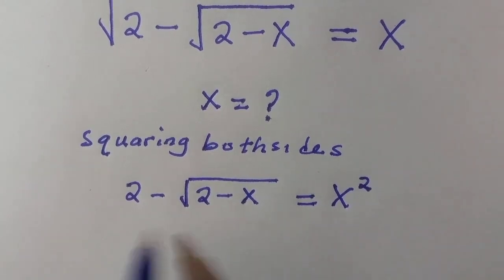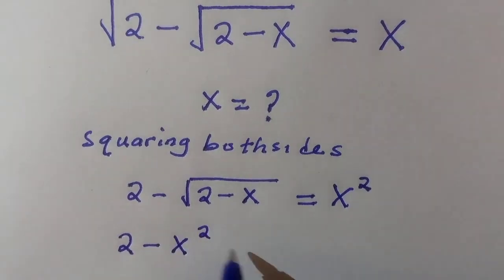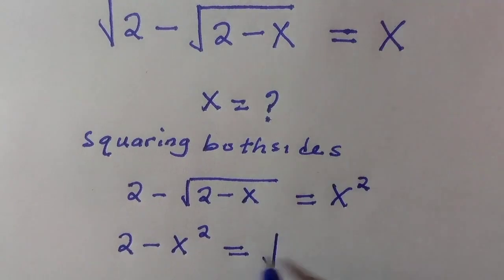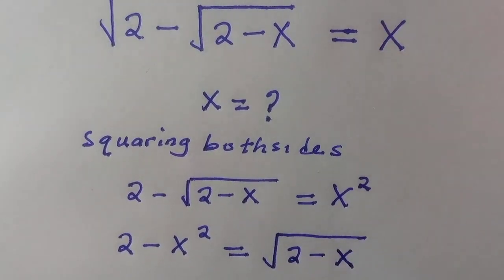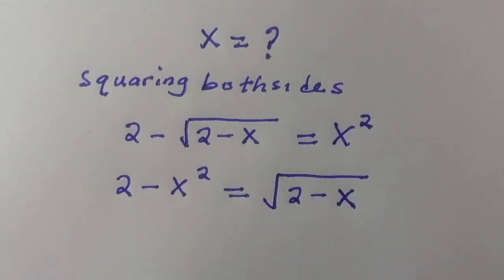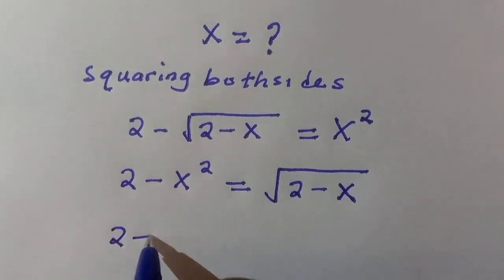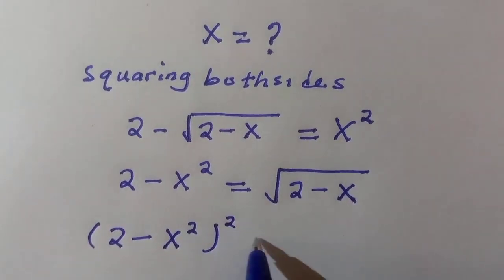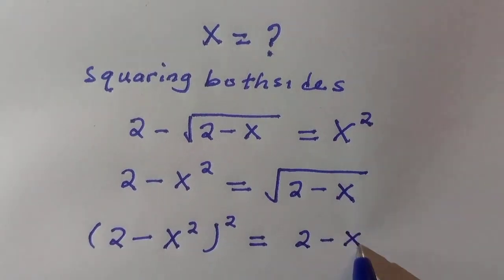For the second time, we can write this equation as 2 minus x squared equals the square root of 2 minus x. So let's take another square of both sides, giving us 2 minus x squared, all squared, equals 2 minus x.